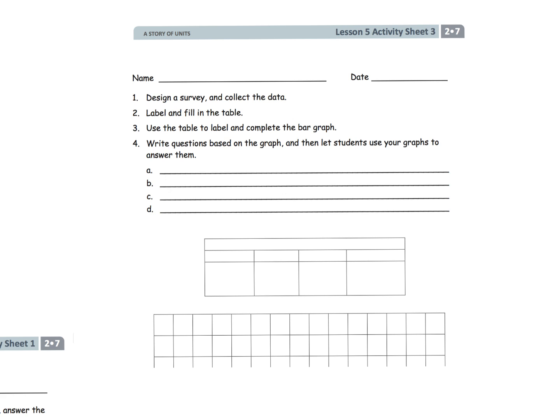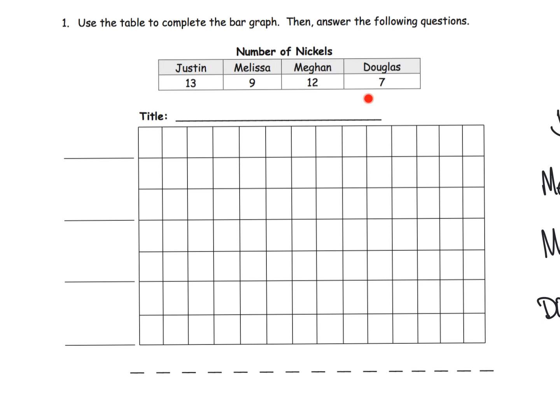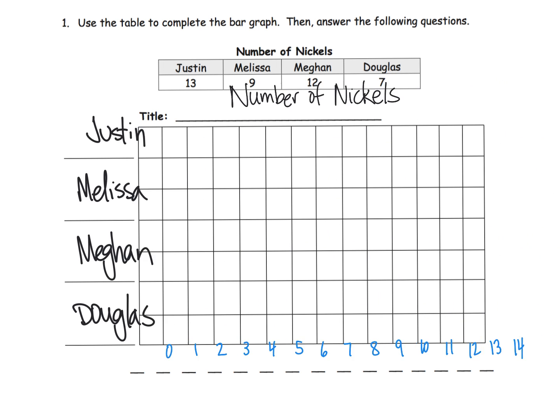Here for the homework, we're going to be continuing to practice making our bar graphs given the data that we have been provided. So in this case we have number of nickels and we've got four kids who have a certain number of nickels. So what I've done earlier, I kind of designed it already.